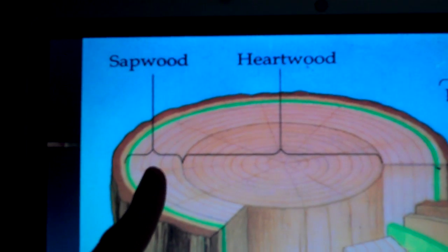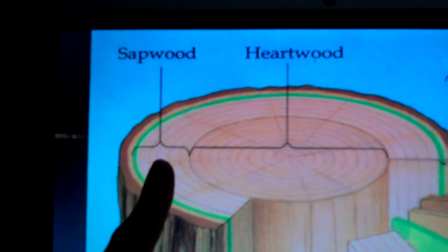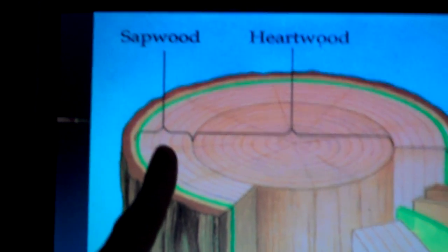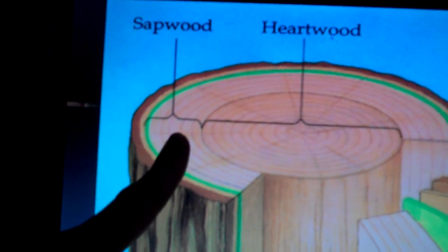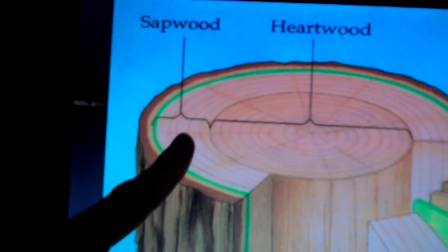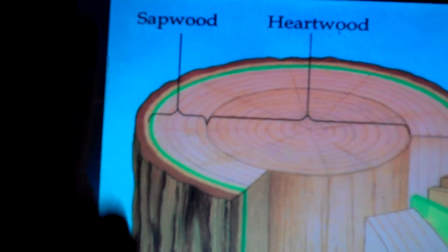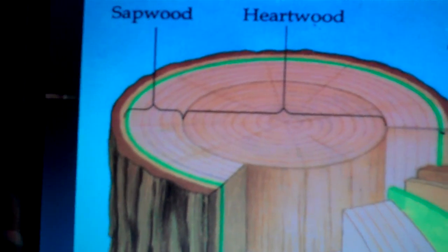The sapwood is the outer layers of secondary xylem, and these still function in transporting water for the plant.